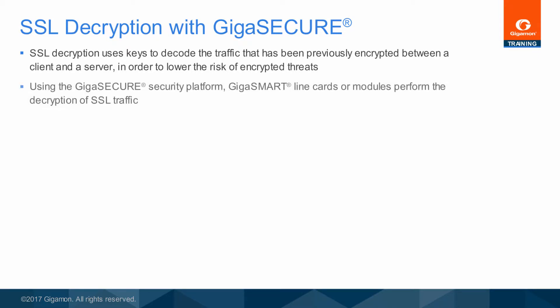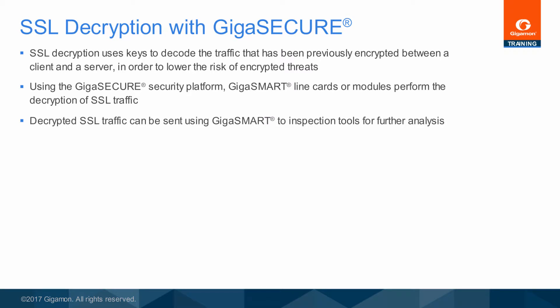Using the wide portfolio of GigaView H-Series nodes and access to the visibility fabric, you can configure the GigaSmart line cards or modules to carry out SSL Decryption. You can then send the decrypted SSL traffic to inspection tools using GigaSmart applications for further analysis. Because of access to the visibility using the GigaSecure security platform, you only need to configure this once in the network.